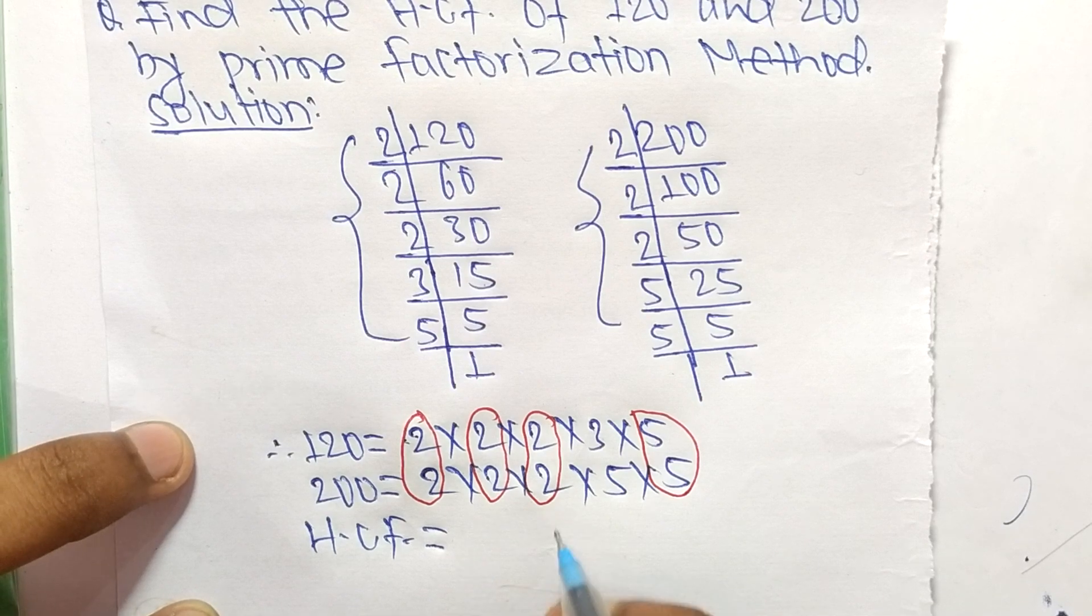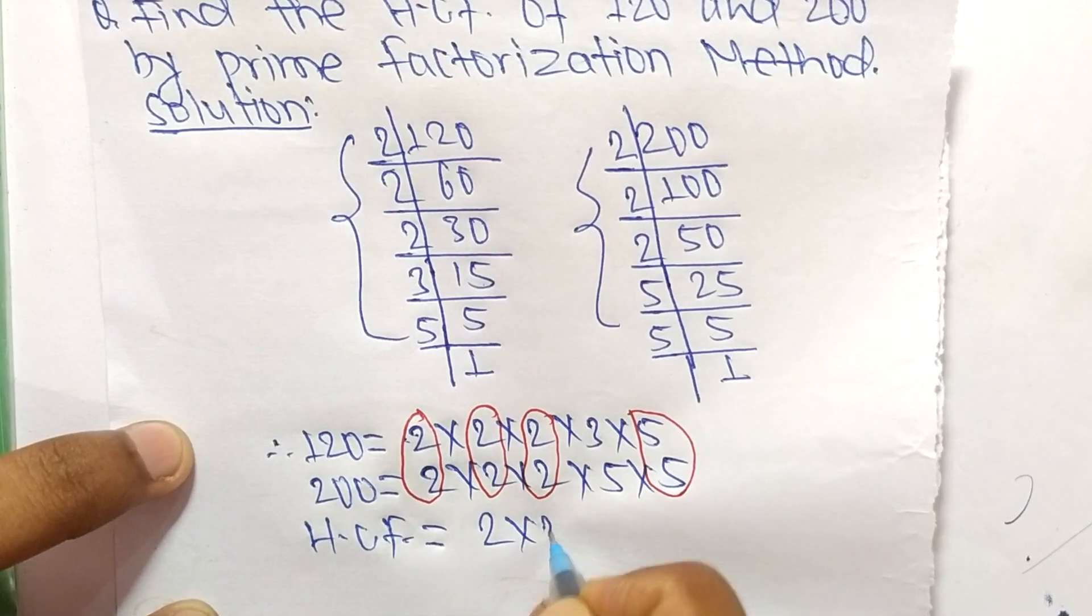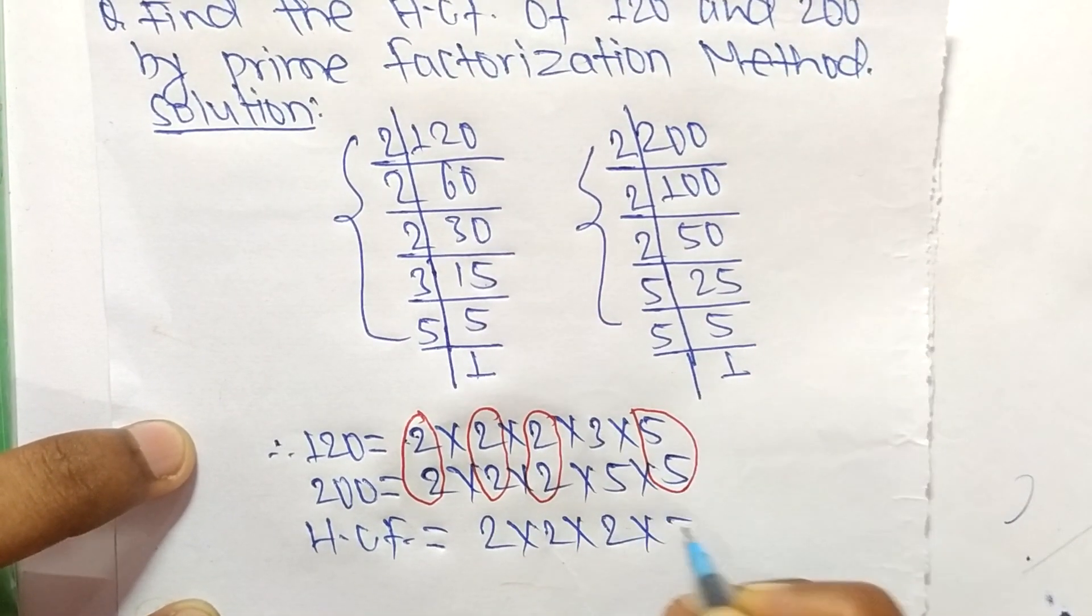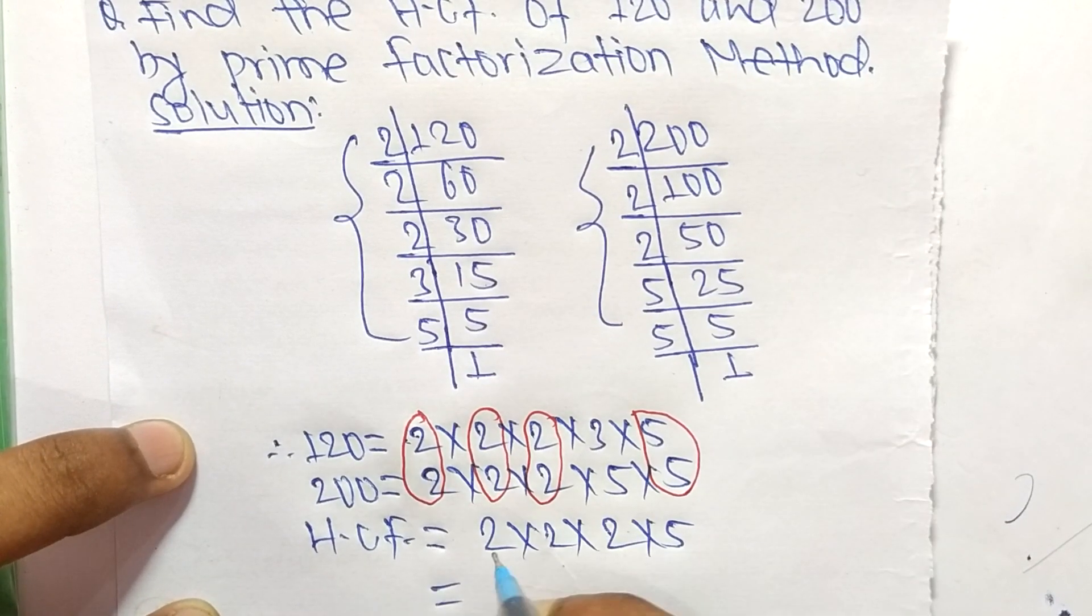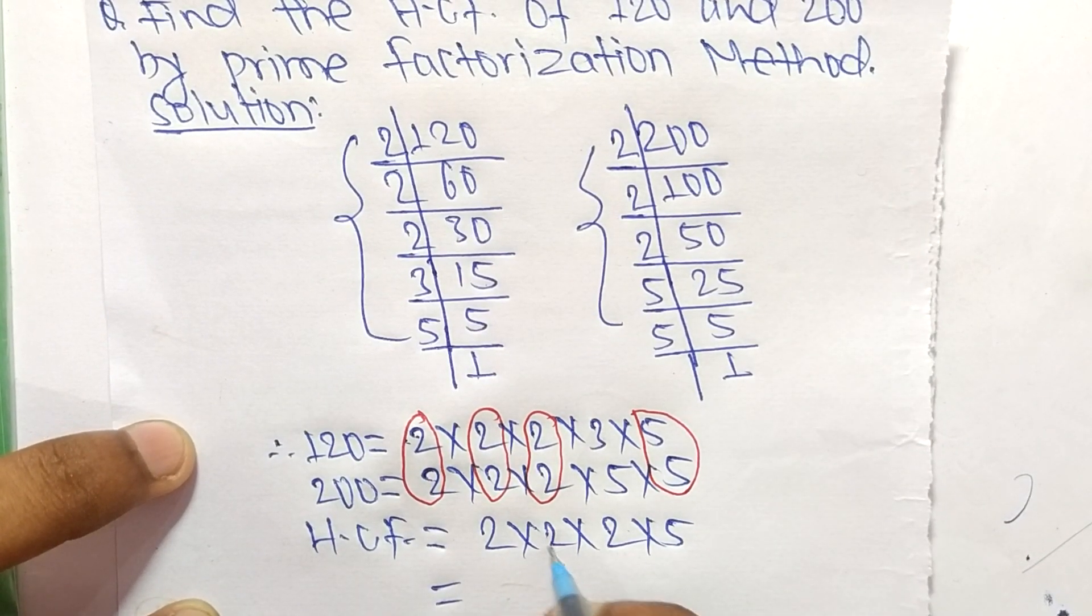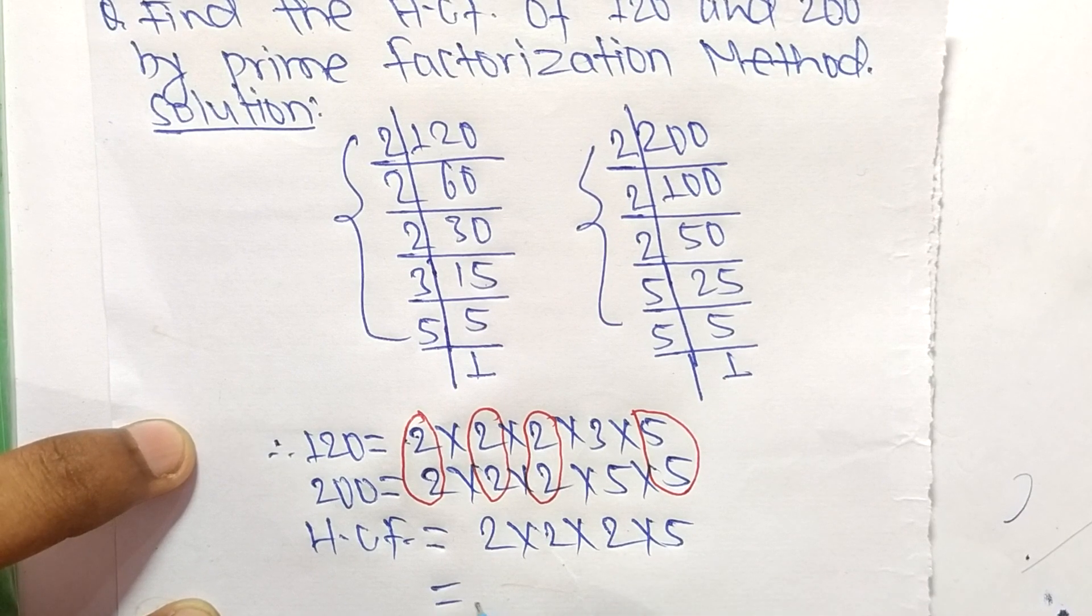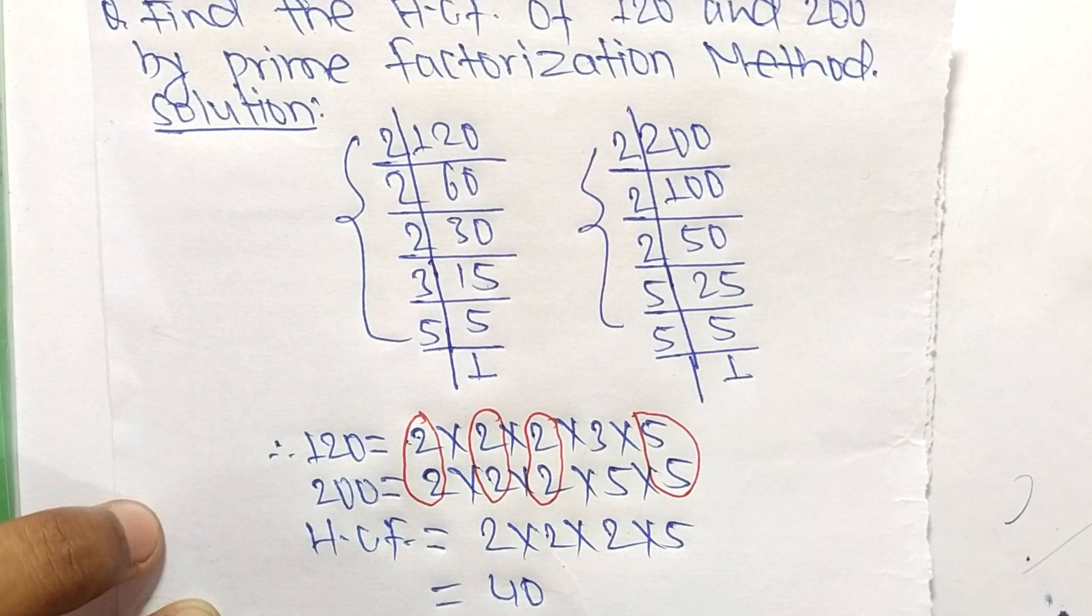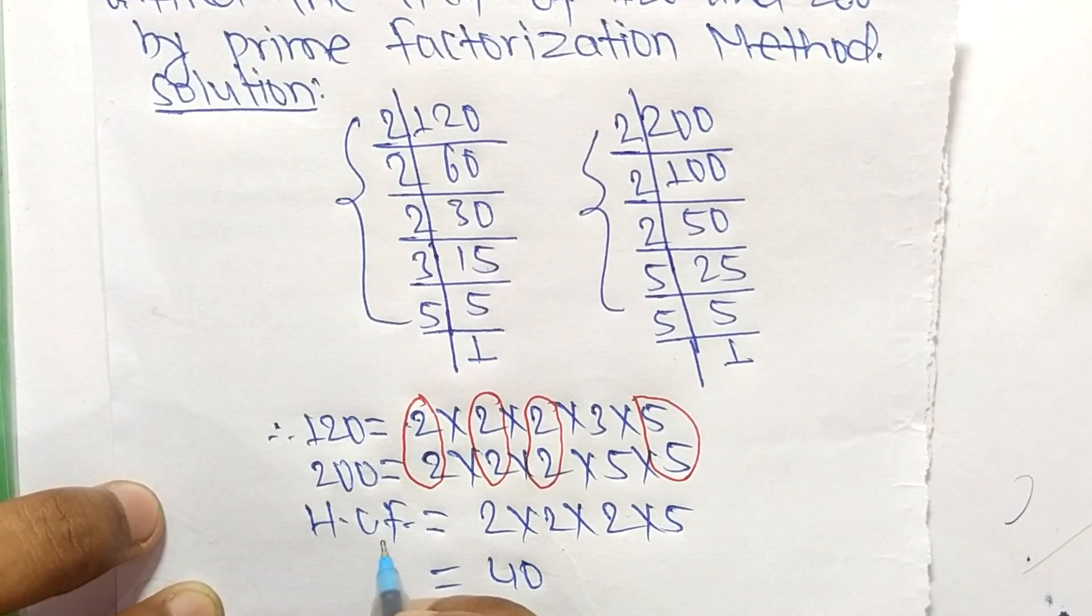The HCF equals the product of common factors: 2 times 2 equals 4, 4 times 2 equals 8, and 8 times 5 equals 40. So 40 is the HCF of 120 and 200.